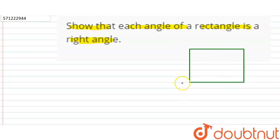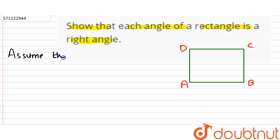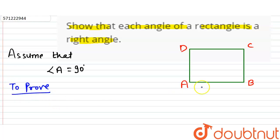The sides are: this is A, this is B, this is C, this is D. Now let us assume that angle A is equal to 90 degrees. If we assume angle A is 90 degrees, then we have to prove that all other angles — angle B, angle C, and angle D — are also equal to 90 degrees.